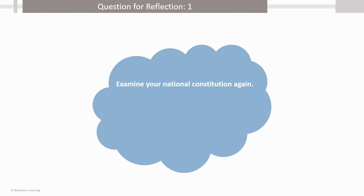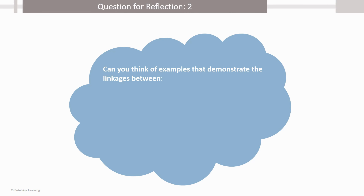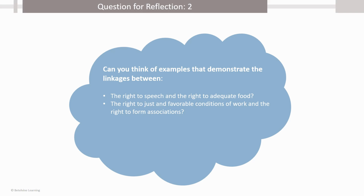Before we move on to the next lesson, let's pause and reflect. Examine your national constitution again. Apart from the chapter on Fundamental Rights, does it also have a chapter titled Directive Principles of State Policy or Duties of the State? If yes, examine the provisions of such a chapter. Which categories of rights does this chapter pertain to? We will examine the answer to this question in the next lesson. Can you think of examples that demonstrate the linkages between the right to speech and the right to adequate food, the right to just and favorable conditions of work and the right to form associations, and the right to equal protection under the law and the right to liberty and security?